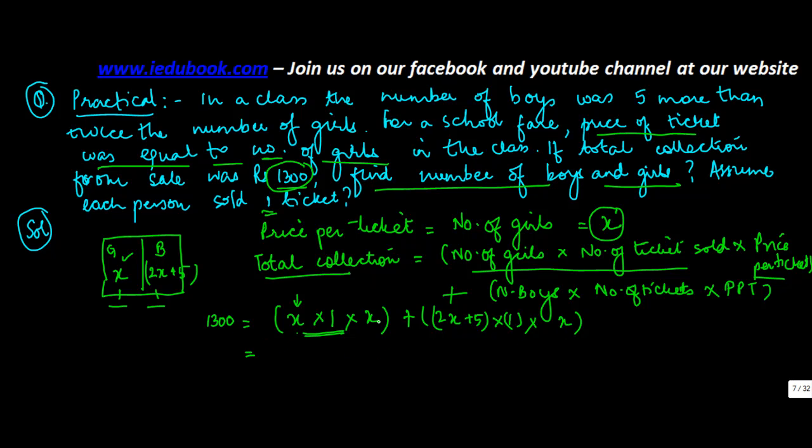So we get x into 1 into x gives you x square, plus 2x plus 5 into 1 will give you 2x plus 5 into x. So you get 2x plus 5 into x. So x into 2x will give you 2x square plus 5x. And we know that this is equal to 1300.